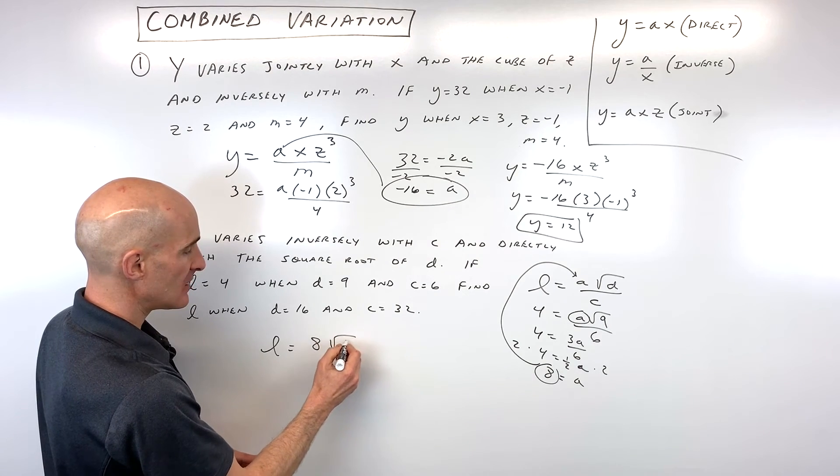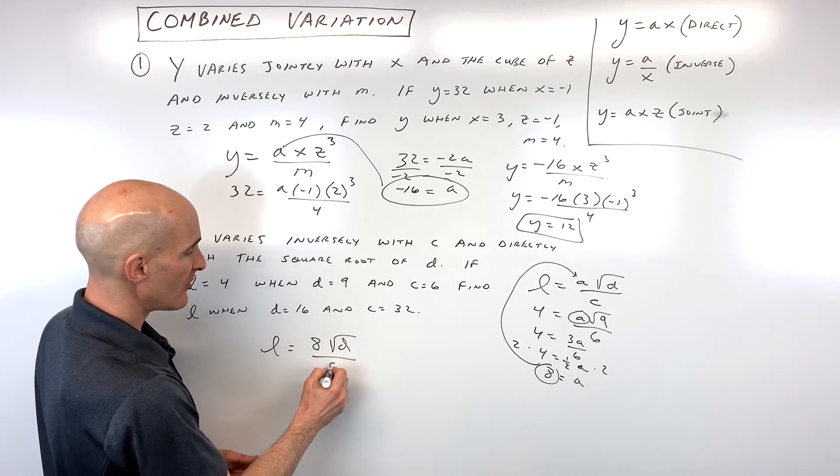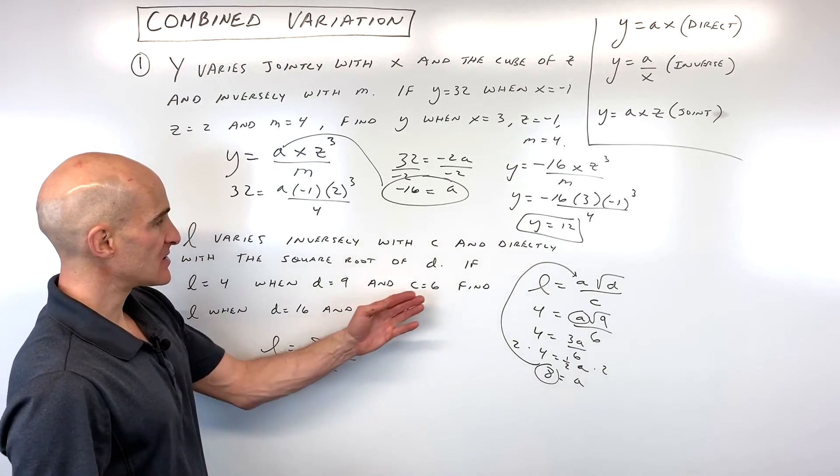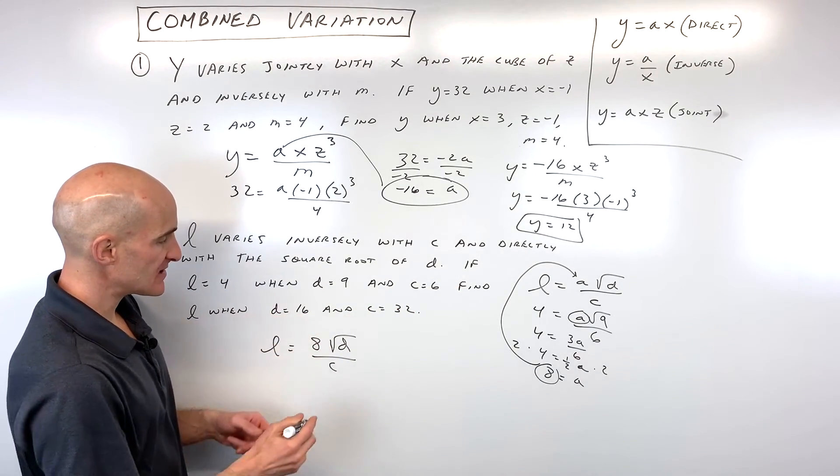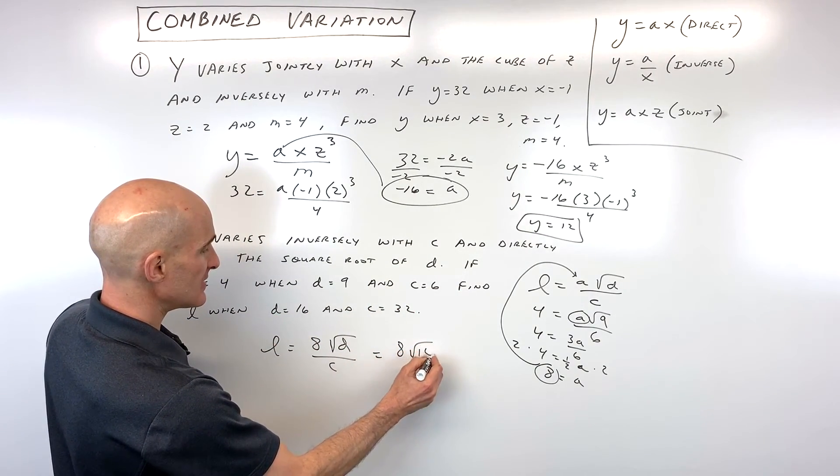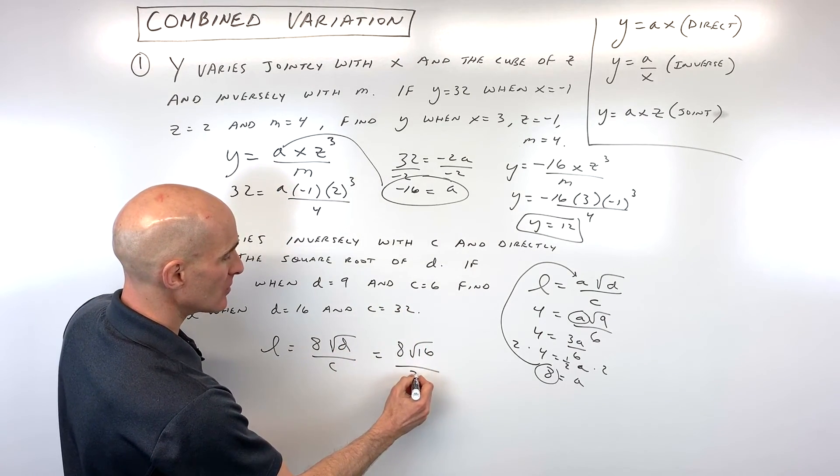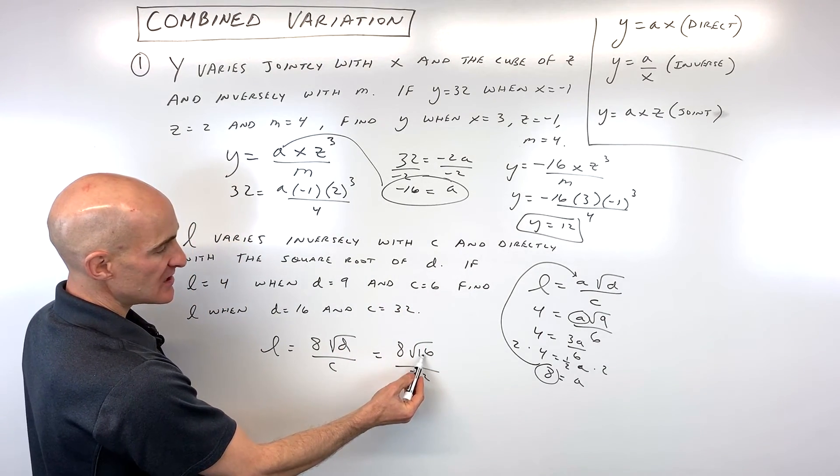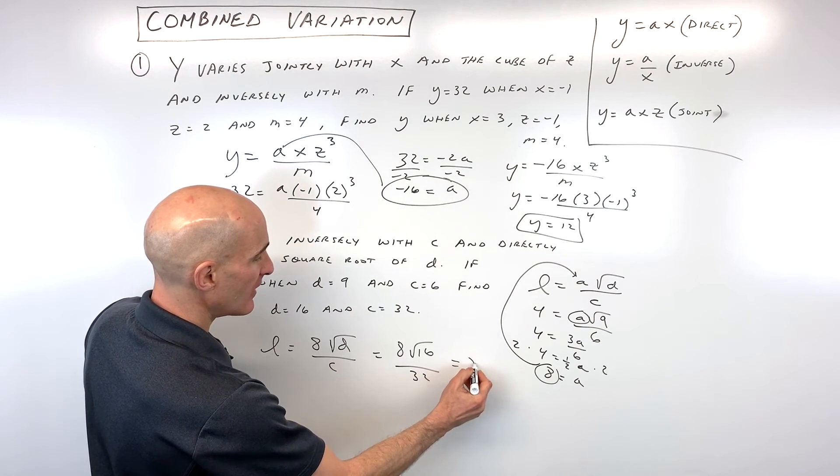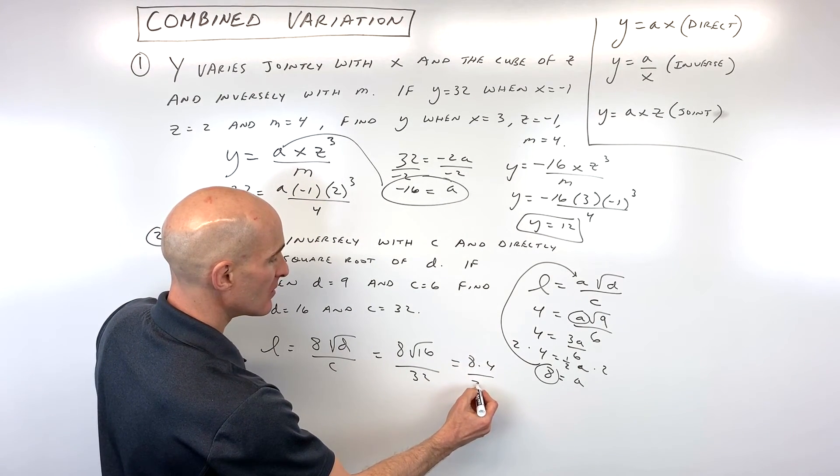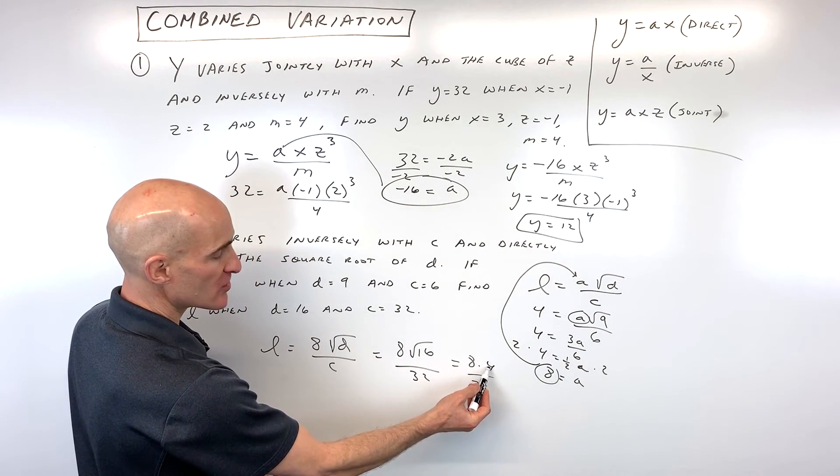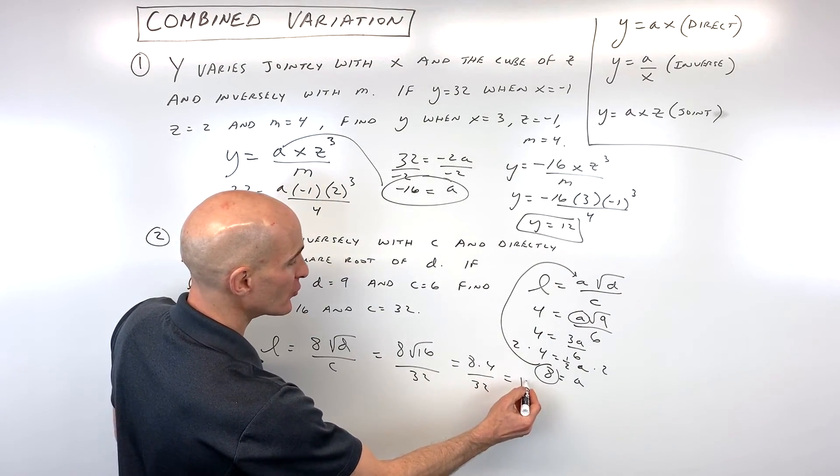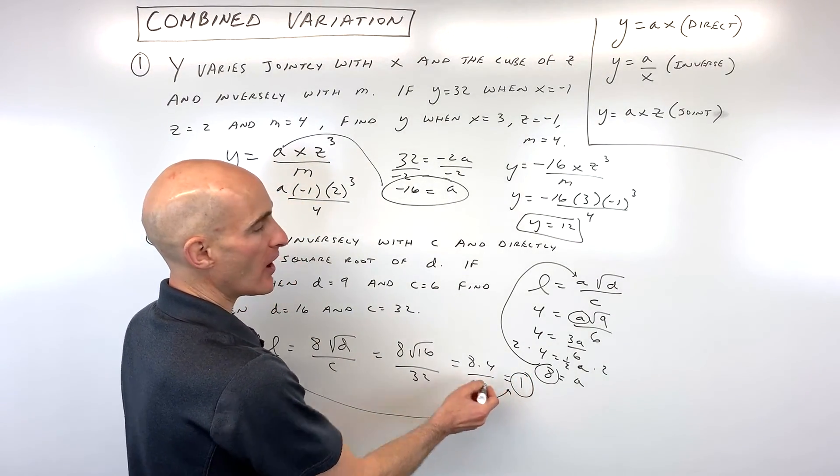So l equals eight times the square root of d, all divided by c. But now it says, find out what l is when d is 16. Okay, d is 16 and c is 32. So square root of 16 is four. So we have eight times four divided by 32. Eight times four is 32 divided by 32 is just equal to one. So you can see that l is equal to one.